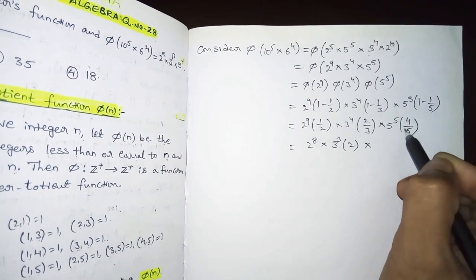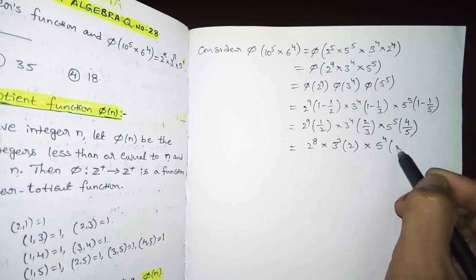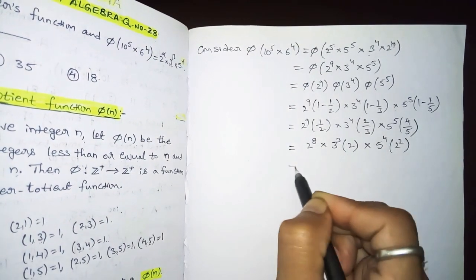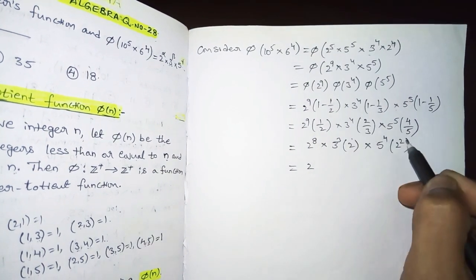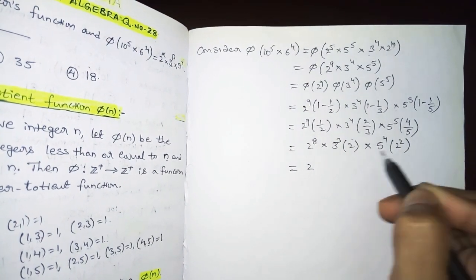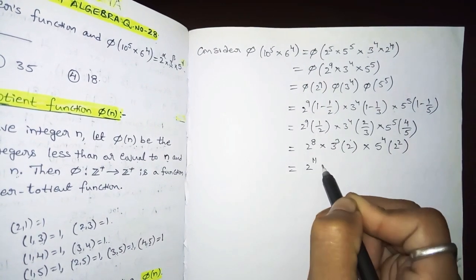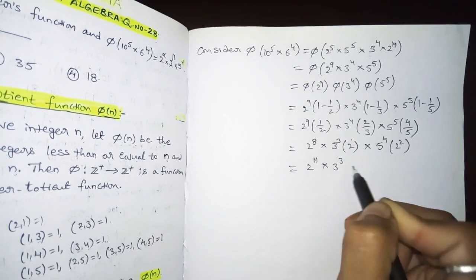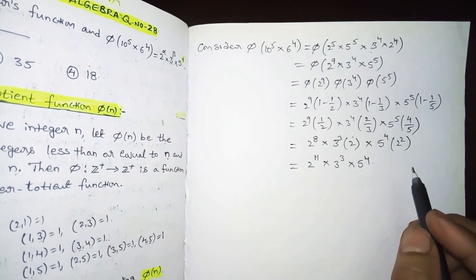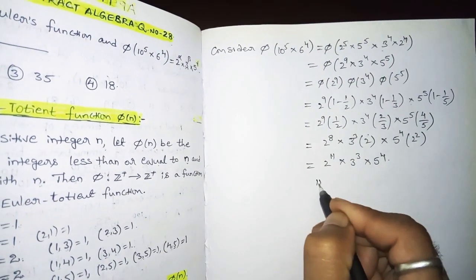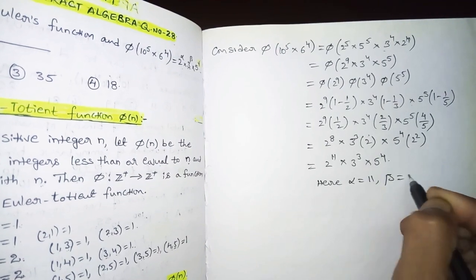Cancelling terms: 2^9 × (1/2) gives 2^8; 3^4 × (2/3) gives 3^3 × 2; and 5^5 × (4/5) gives 5^4 × 4 = 5^4 × 2^2. Combining all powers of 2: 2^(8+1+2) = 2^11. So the result is 2^11 × 3^3 × 5^4.